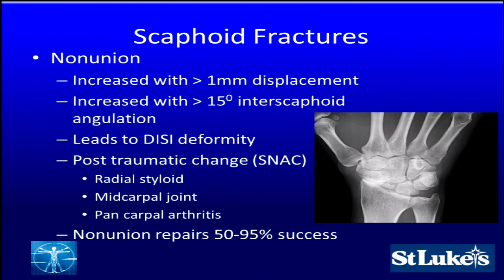Nonunion of the scaphoid is certainly a problem, particularly with displaced fractures — typically waist fractures with more than one millimeter of displacement. If intrascaphoid angulation changes by 15 degrees compared to the contralateral side, greater than 35 degrees in general, that is a flexion problem that increases your risk of nonunion. This can lead to a DISI deformity and post-traumatic change called SNAC wrist — scaphoid nonunion advanced collapse — starting with arthritis at the distal pole, progressing to the midcarpal joint, and eventually pancarpal arthritis. Nonunions have varied success rates with operative repair, anywhere from 50 to 95 percent, so we should try to get these right the first time.